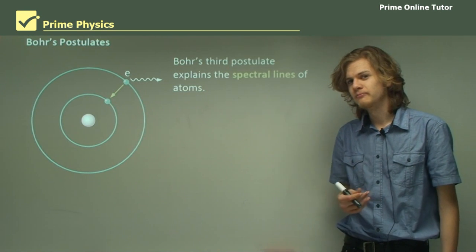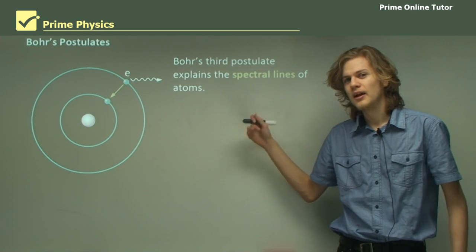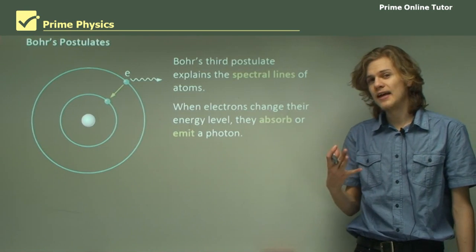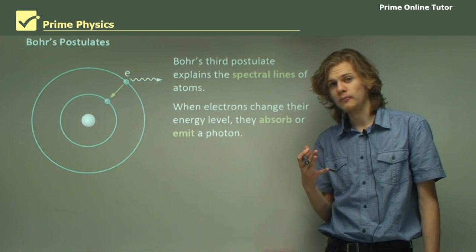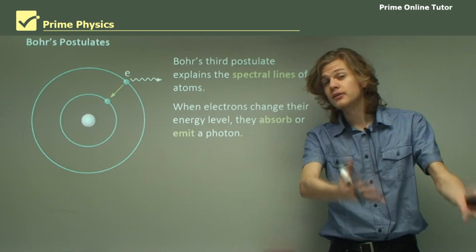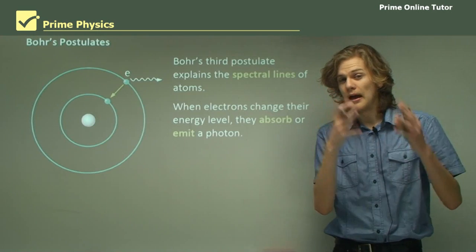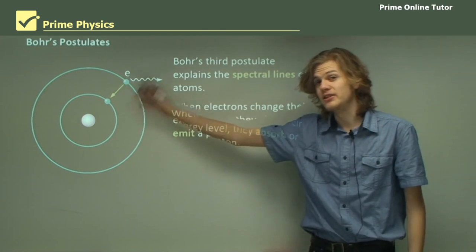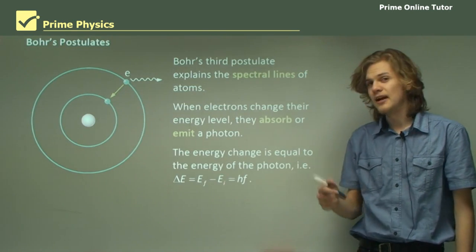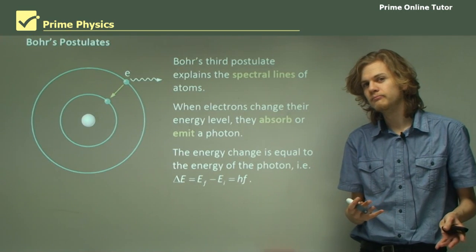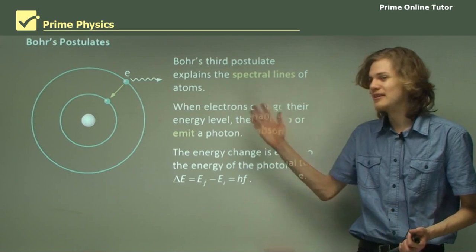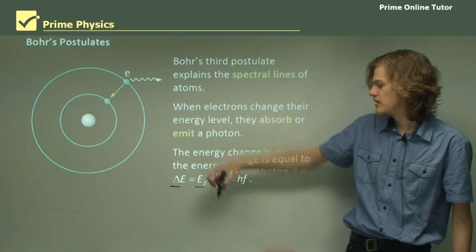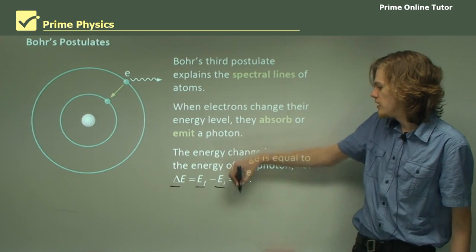So Bohr's third postulate explains the spectral lines of atoms. And this is what allows electrons to jump between energy levels. The postulate says that when electrons change their energy level, they absorb or emit a photon. If they go from a high energy level to a low energy level, they emit a photon of energy. If they go from a low energy level to a high energy level, they can only do it if they first absorb a photon of energy. They sort of make this jump, as you can see. So the energy change is equal to the energy of the photon. Makes sense, right? But you need to write these things down if you're making a whole new theory. So we can see that the change in energy, which is the final energy state minus the initial energy state, will be equal to the energy of the photon, hf.